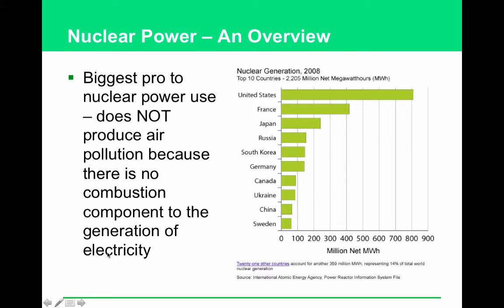What country is the top producer of nuclear power? The United States — by far and away the greatest producer of nuclear power. That's probably a nugget you want to tuck away in your head for the national exam.